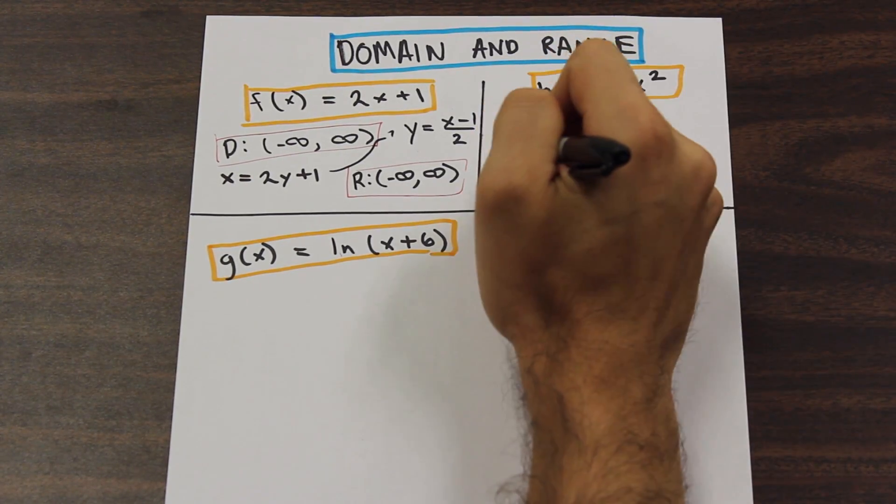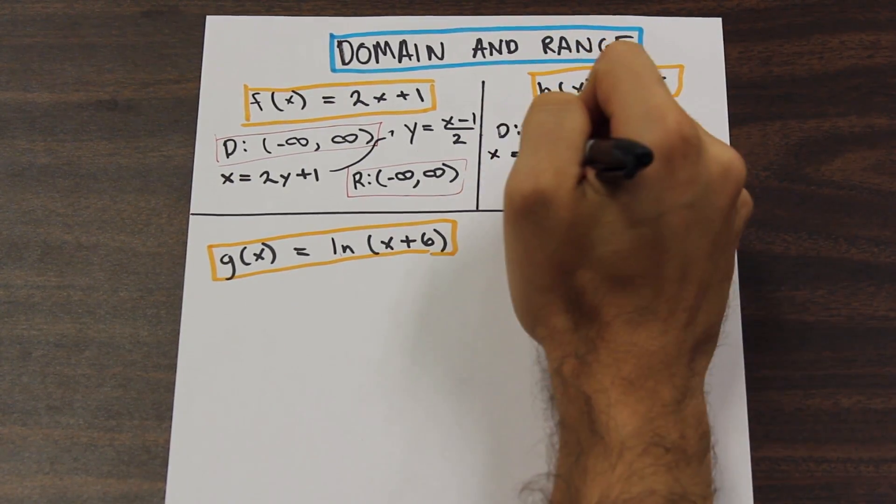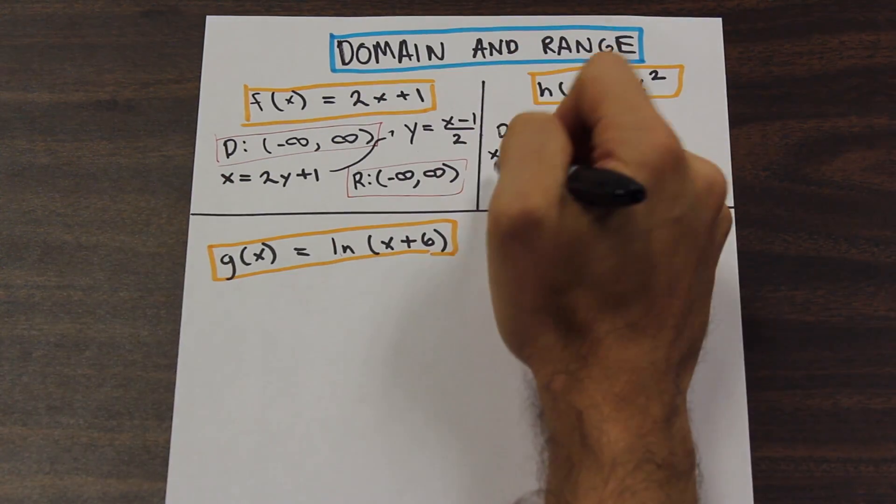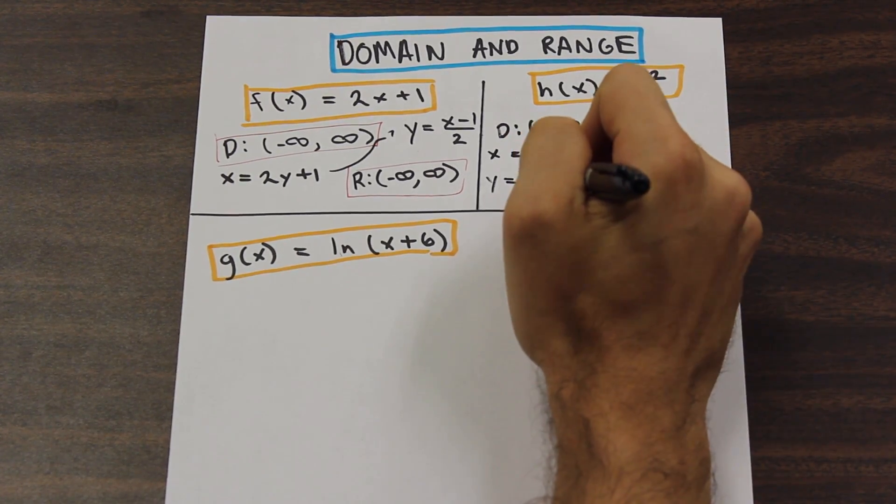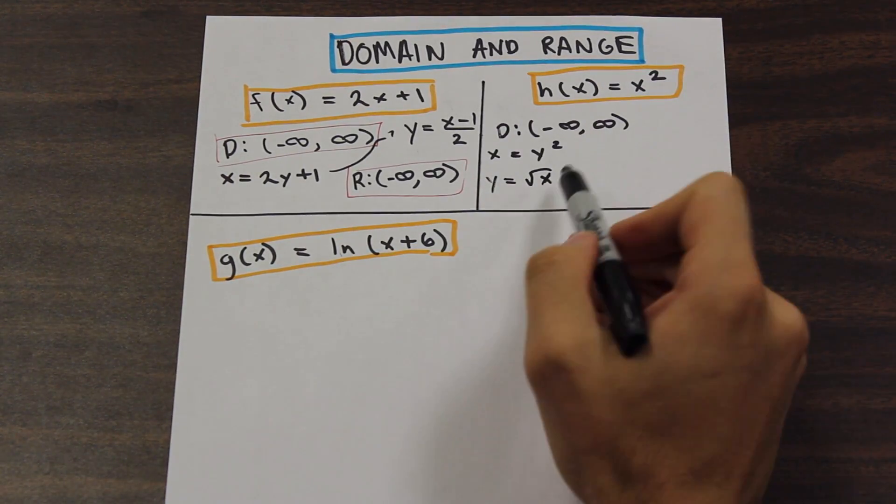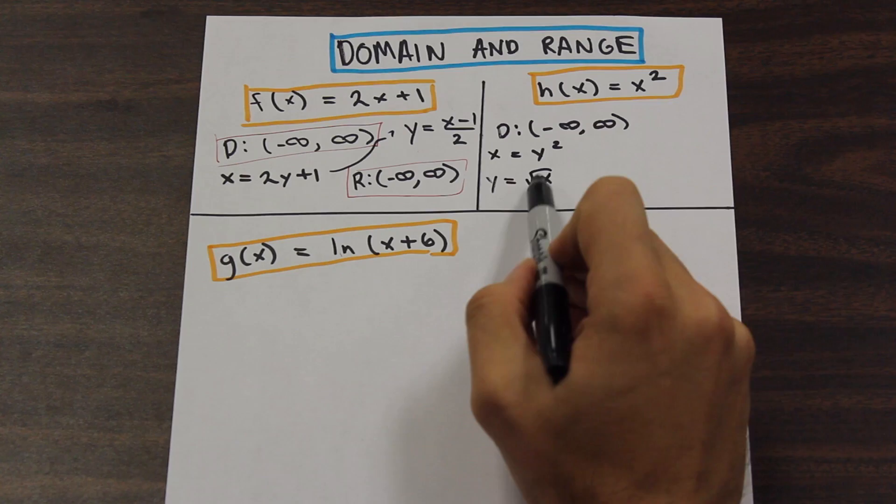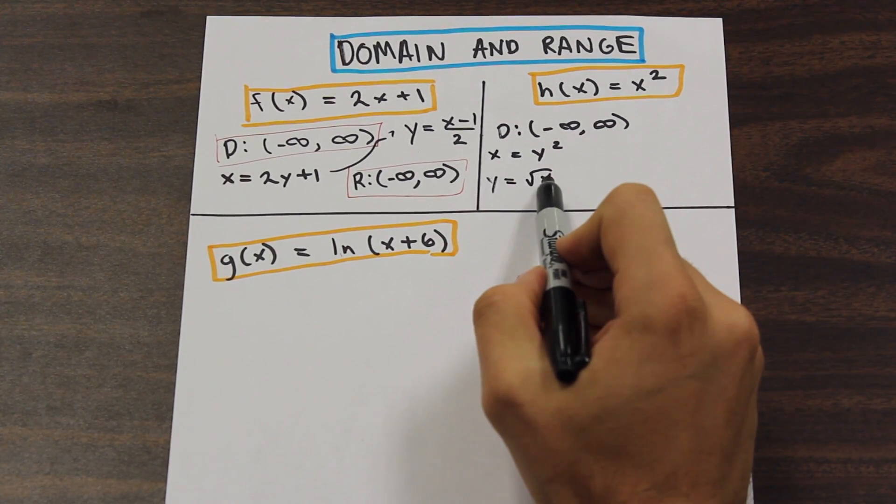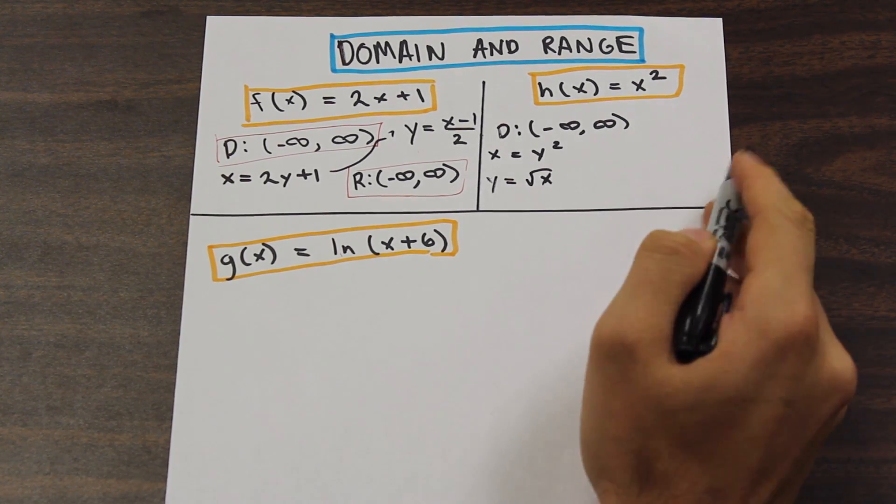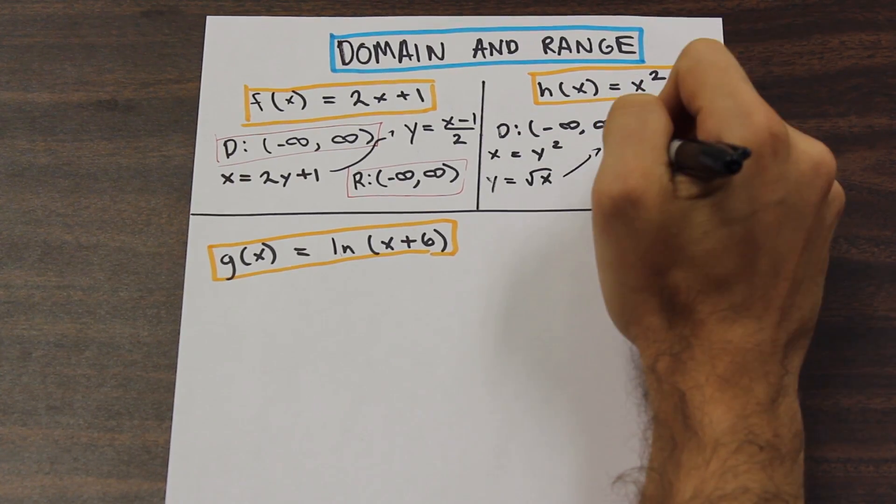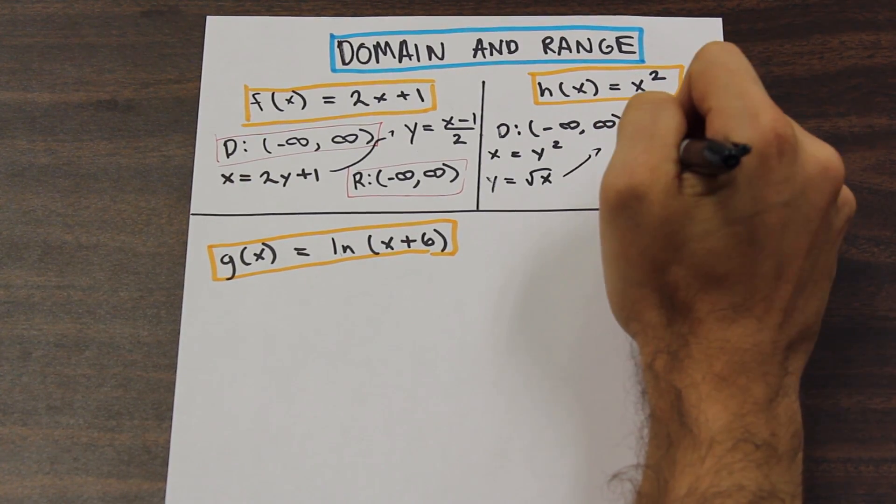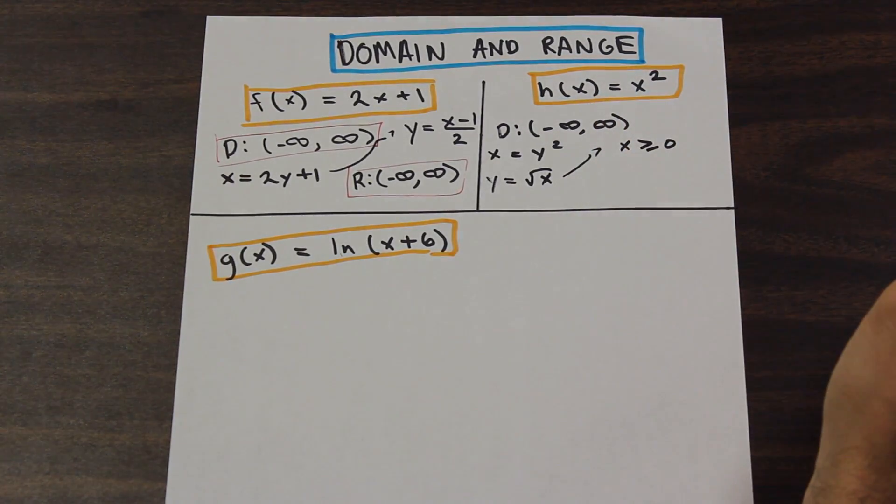How do we do it? Same way, we take the inverse of the function. So we're going to say that X is equal to Y squared, and Y is equal to square root of X. So we've simplified that. Now, we do have a condition here for the range. We're solving for the domain of the inverse, is that when we put a value into a square root, it always needs to be greater or equal to zero.